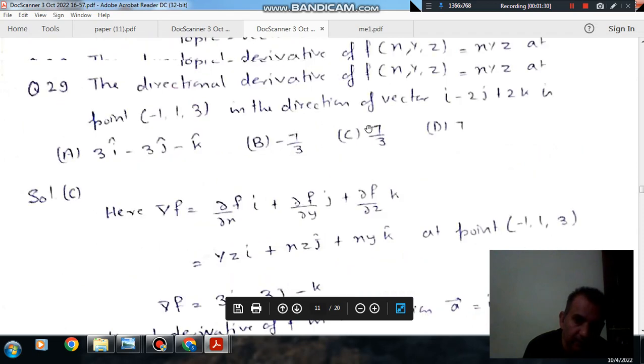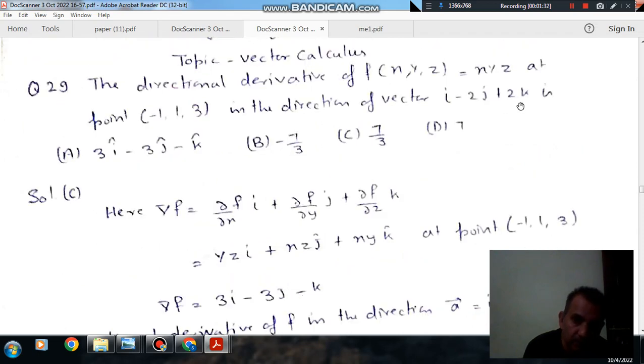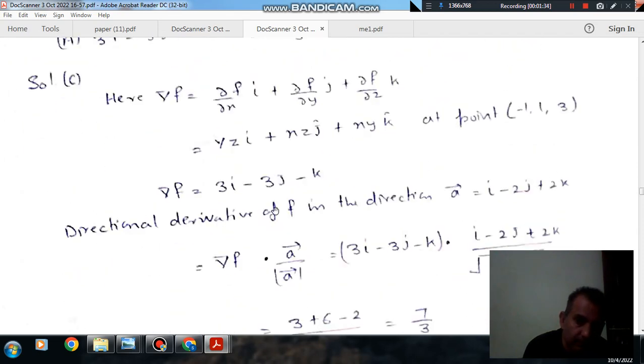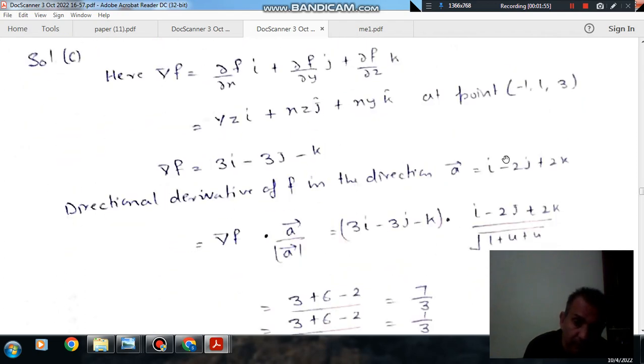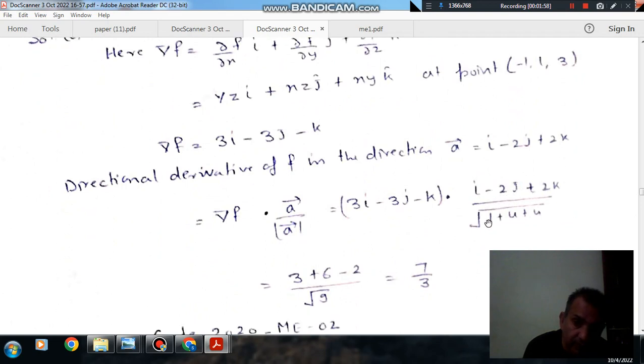Now we have to find the directional derivative in the direction of i - 2j + 2k. The magnitude of this vector is sqrt(1 + 4 + 4) = sqrt(9) = 3.